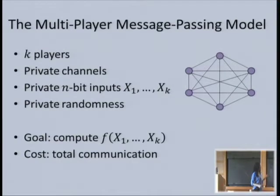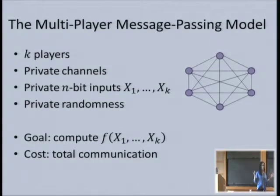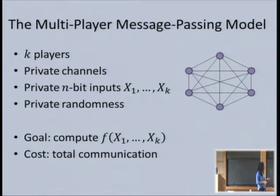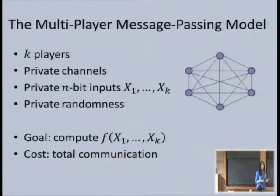There is some technical subtlety in defining this model. In two-player communication or even multiplayer with a shared blackboard, everyone sees the entire transcript, so it's well-defined to say the protocol should tell us who talks next based on the entire transcript. But in this model, every player sees only part of the transcript—only the messages addressed to that player. So how do we know who talks at any given point? Do they all talk at the same time? We have a definition: it's synchronous and goes in rounds.